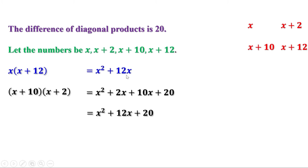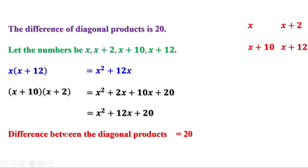Now let us look at these two expressions: x square plus 12x, and x square plus 12x plus 20. Clearly, this is 20 more than this. That is, x plus 10 into x plus 2 is 20 more than x into x plus 12. Therefore, the difference between them is always 20.